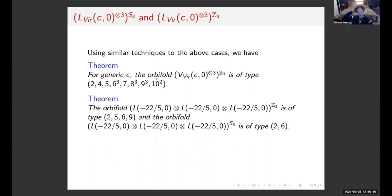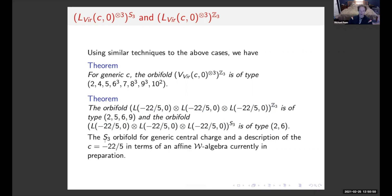Here are some theorems — presented as conjectures last time I gave this talk, but now proven and both in the Journal of Algebra paper. For generic c, the Z₃ orbifold of the threefold tensor product of the universal Virasoro is of type (2, 4, 5, 3×6, 7, 3×8, 3×9, 2×10). We worked out simple quotients: at central charge -22/5 the Z₃ orbifold simplifies to type (2,5,6,9). This allowed us to find the S₃ orbifold in that case by taking the Z₂ orbifold on top, giving type (2,6). In progress: working out the S₃ orbifold for generic central charge. There is an isomorphism between the S₃ orbifold at c = -22/5 and a nice affine W-algebra, also of type (2,6).